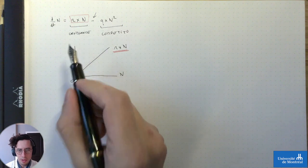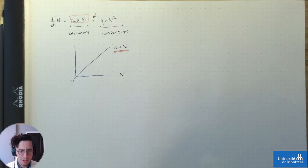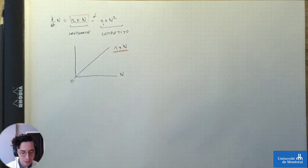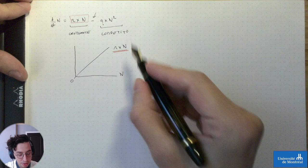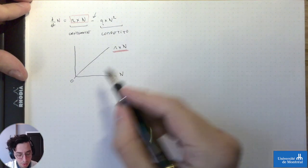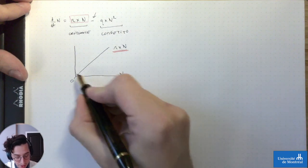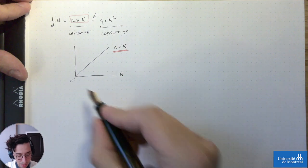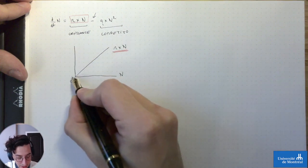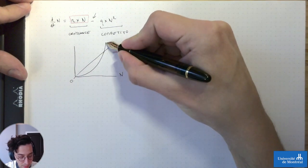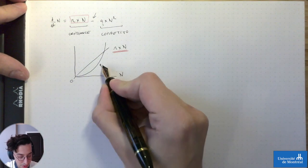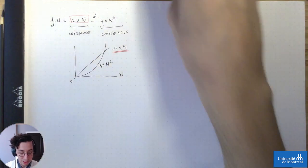Cet axe-là, on ne lui a pas donné d'unité. C'est juste des parties de dn/dt — la quantité de changement due à chacun des mécanismes à l'intérieur de notre modèle. Notre deuxième mécanisme, c'est q×n². Q×n², ça va décrire une parabole qui va couper l'axe y à 0 pour n=0. On vient d'apprendre quelque chose d'assez important sur notre modèle.